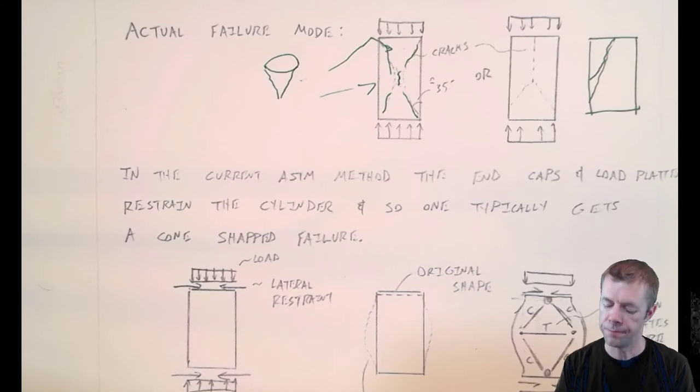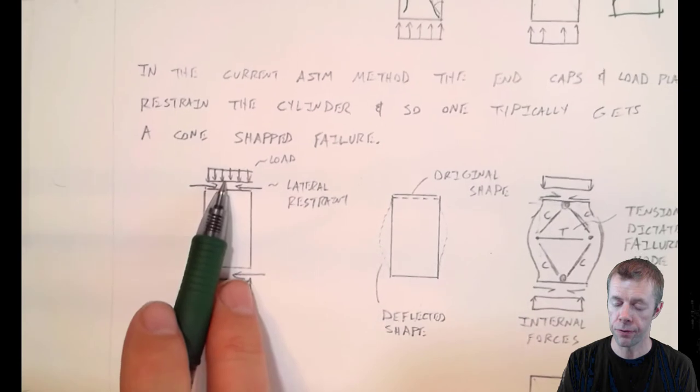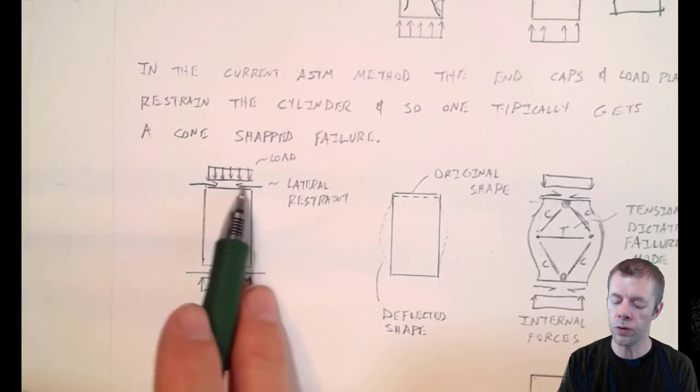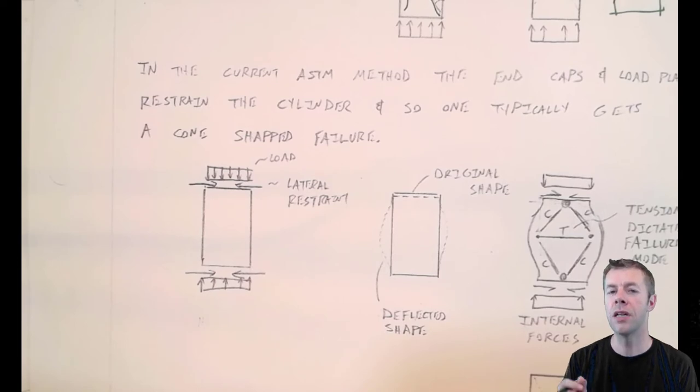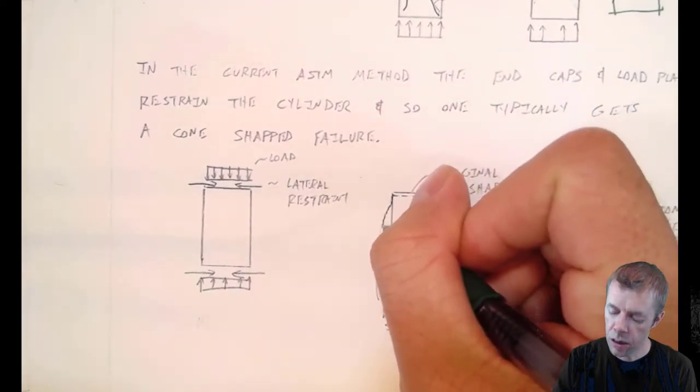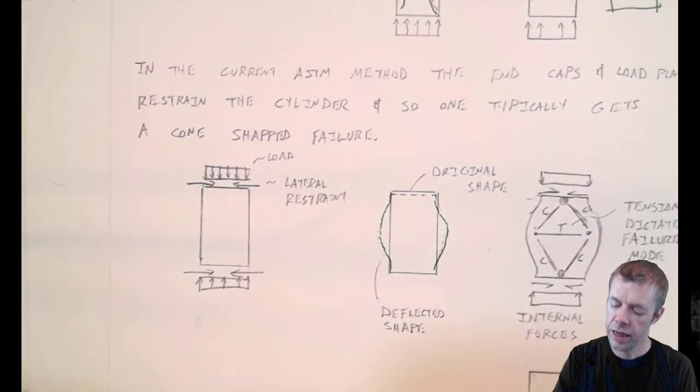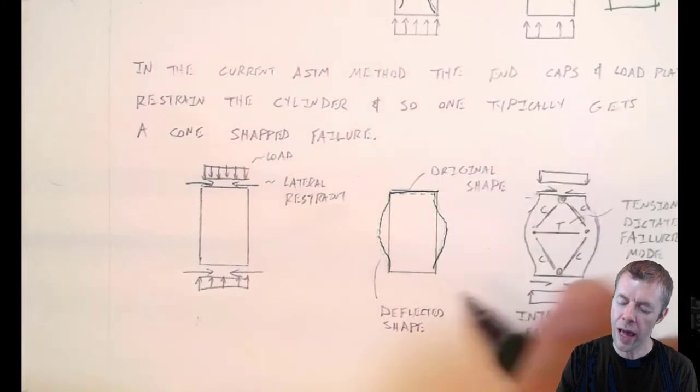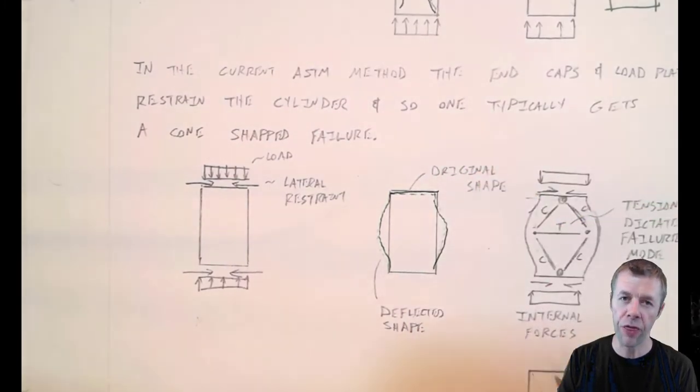What am I talking about? I mean that even though we're applying load like this, that there still is load applied from the sides, or there's still restraint, as in the concrete can't bow out at those locations. So because of that, the deflected shape looks something like this. It's restrained or held at the top and held at the bottom. And this is called barreling, because it looks like a barrel.